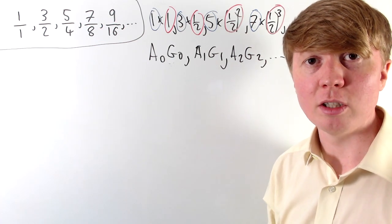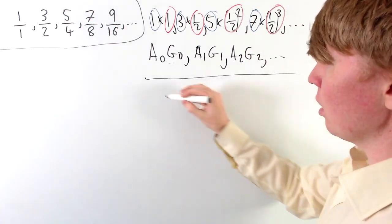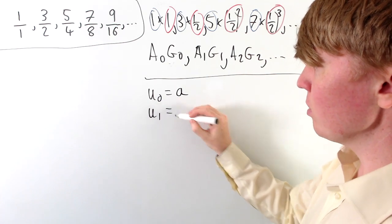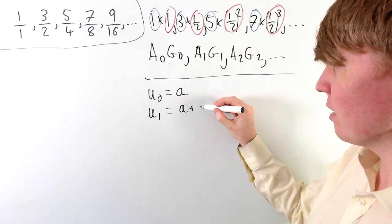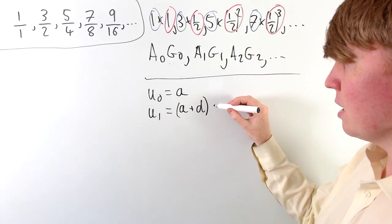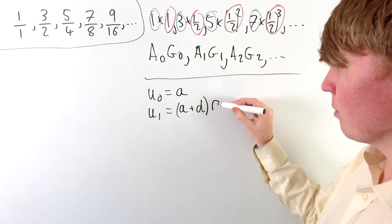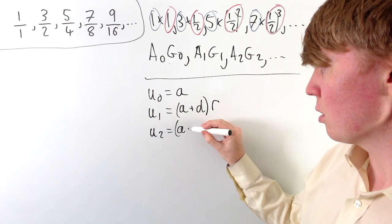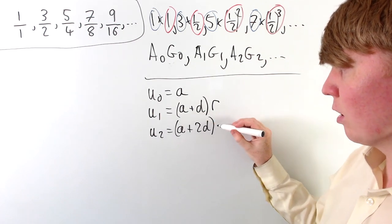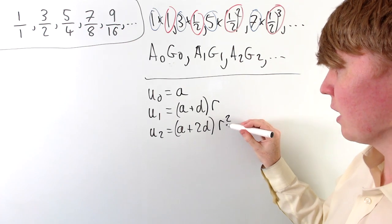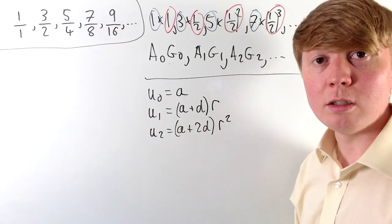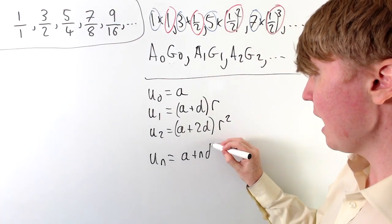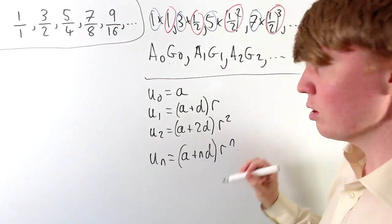What does the nth term look like for such a sequence? The first term u₀ is just a. For u₁ we add the common difference d to get (a + d), then multiply by the common ratio r. For u₂ we get (a + 2d)·r². So the general nth term is uₙ = (a + nd)·rⁿ.